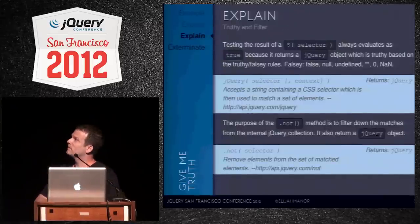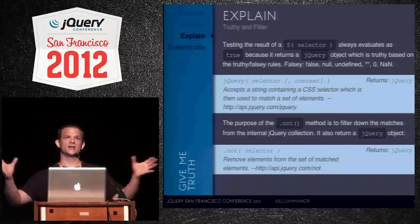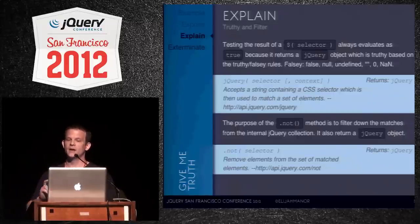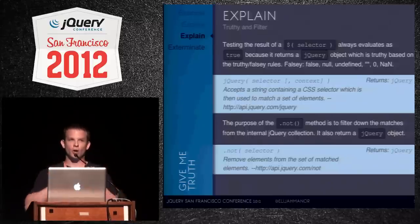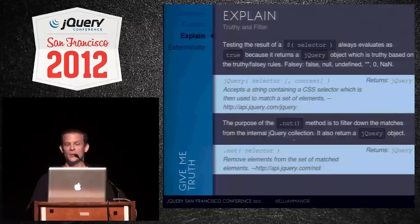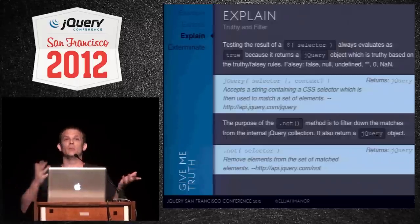The reason both are problems: we're testing the jQuery object for truthiness, which tells us nothing about whether it selected anything on the page. In JavaScript, falsy values are: false, null, undefined, empty string, zero, negative zero, and NaN. A jQuery object is none of those things, so even an empty jQuery object is always truthy. The not method doesn't return a Boolean — it filters the internal collection of matched elements.